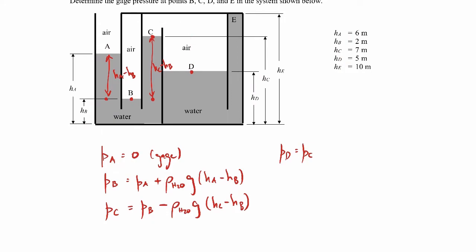Now to find the pressure at E, we're going to start with the pressure at D. And we can just move straight over horizontally because the pressure doesn't change as you move laterally in the same fluid.